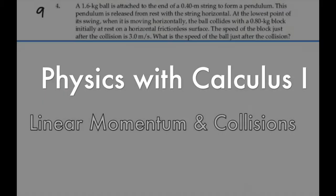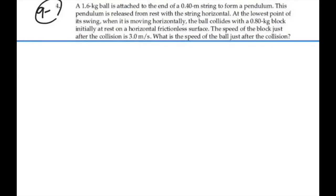Here's problem 9.4. A 1.6 kilogram ball is attached to the end of a 0.4 meter string to form a pendulum. This pendulum is released from rest with the string horizontal. At the lowest point of its swing, when it's moving horizontally, the ball collides with a 0.8 kilogram block initially at rest on a horizontal frictionless surface. The speed of the block just after the collision is 3 meters per second. What's the speed of the ball just after the collision?